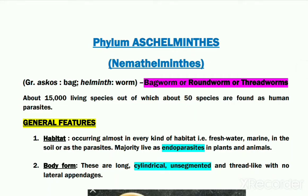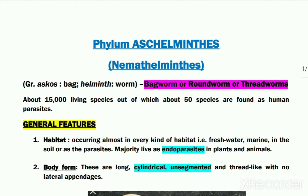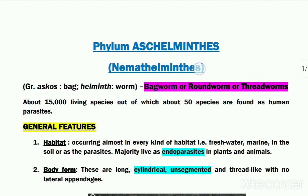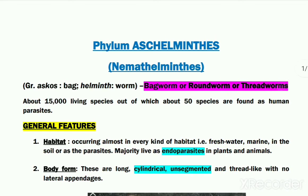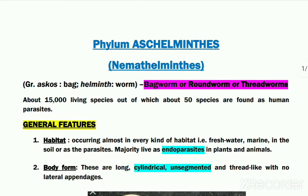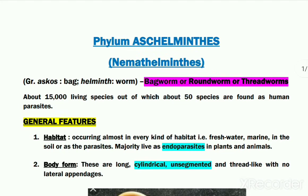With this lecture we will be starting our next invertebrate phylum, which is Phylum Skhelminthus, also referred to as Phylum Nematohelminthus. The organisms belonging to this phylum are generally referred to as bagworms, roundworms, or threadworms due to their morphology. There are about 50 species of roundworms which are found as human parasites.